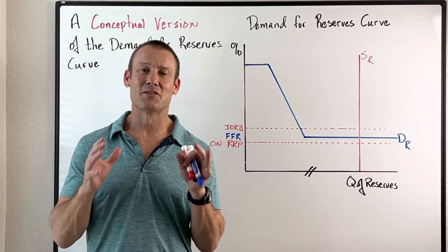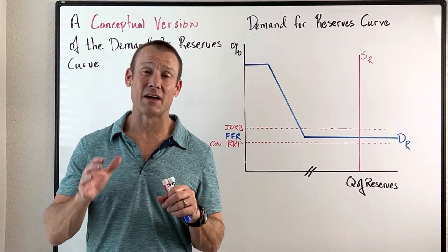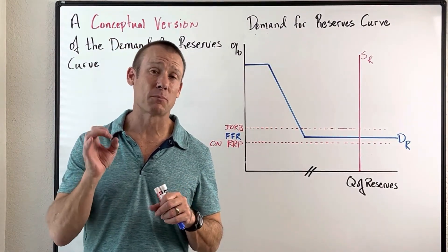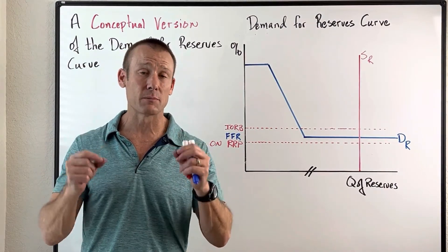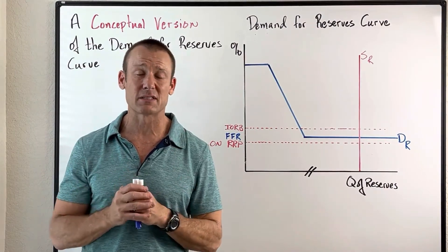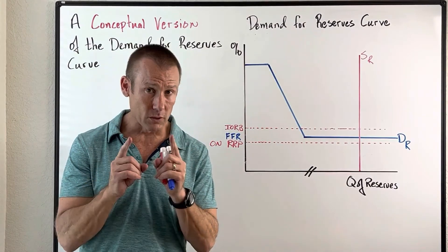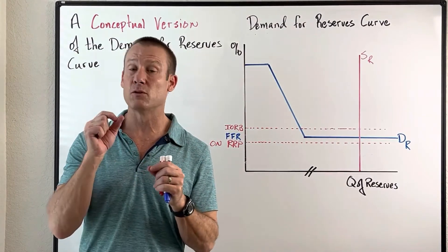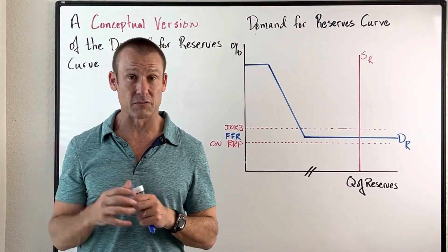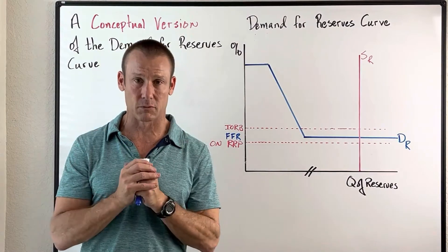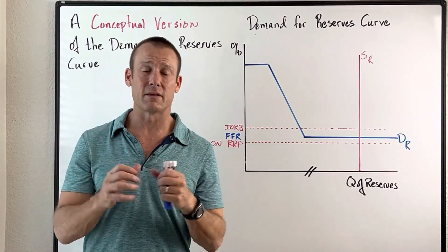Hey everybody, this is video four in a video series on the Fed's Ample Reserve Policy Framework. The Fed now implements monetary policy using an Ample Reserve Policy Framework. Before 2008, they used a Limited Reserve Policy Framework; since 2008, an Ample Reserve Policy Framework. Why is that?